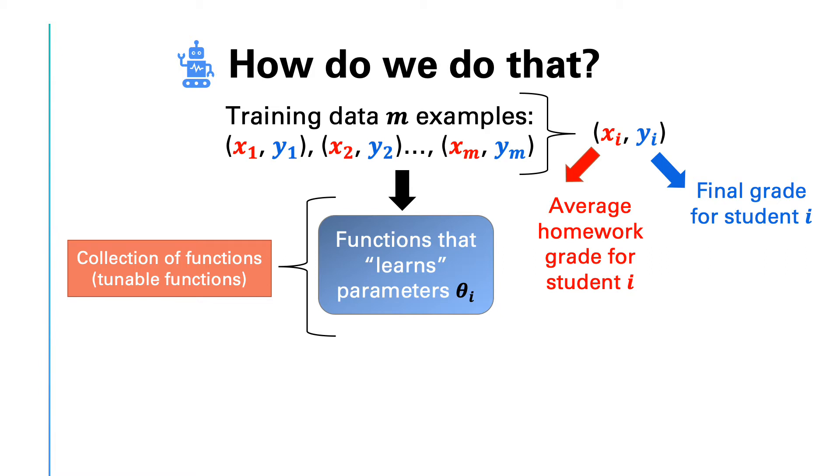For example, let's consider a very simple set of functions. We can define a linear regression function as y equals θ₀ plus θ₁x. It is a very simple approach for predicting a quantitative response y on the basis of input variable x. It assumes that there is approximately a linear relationship between x and y.